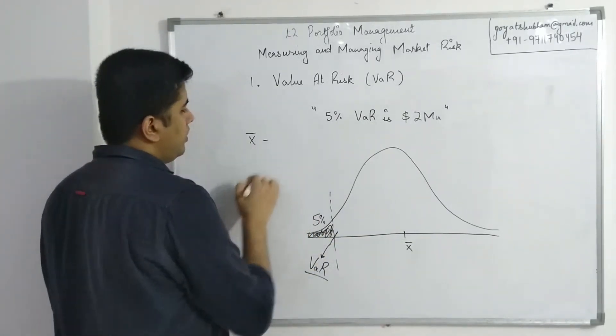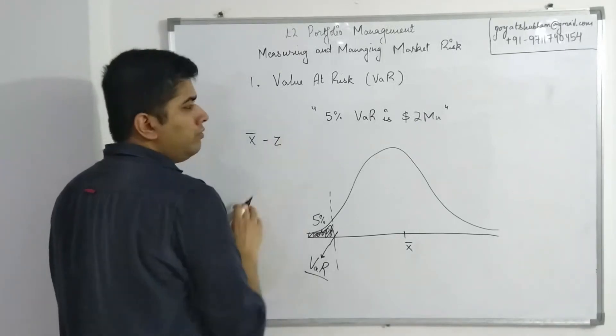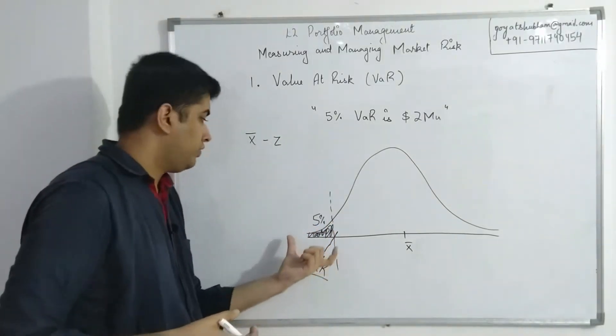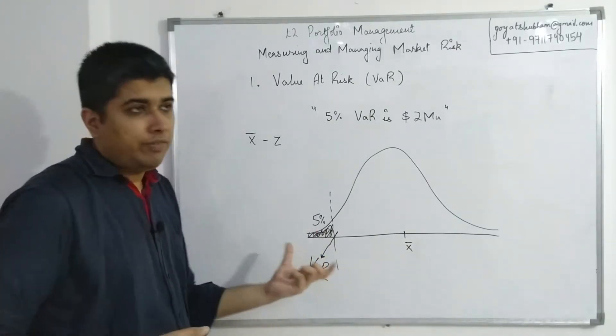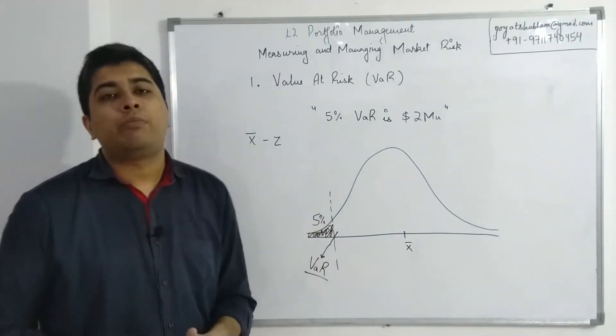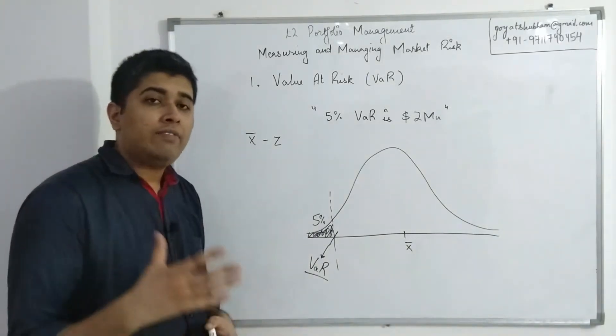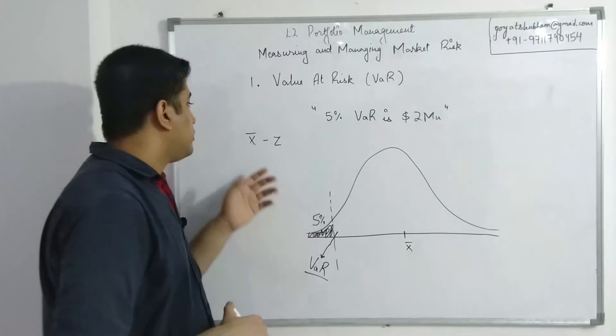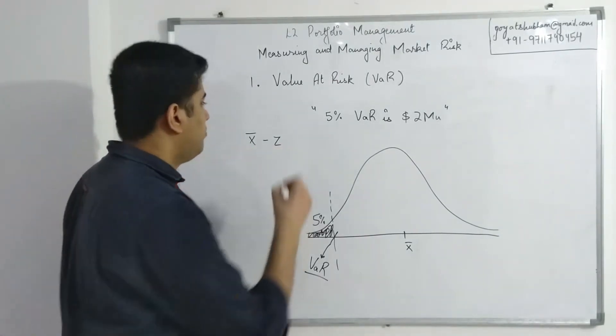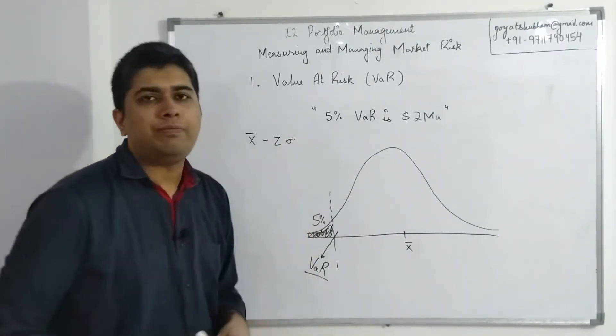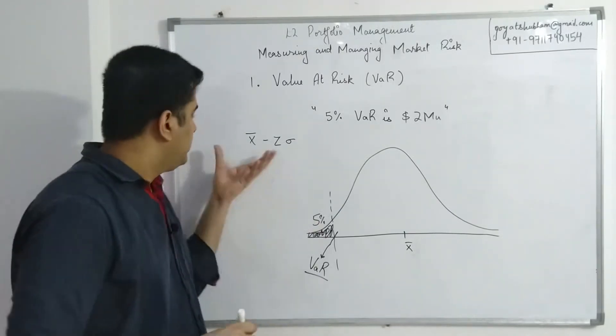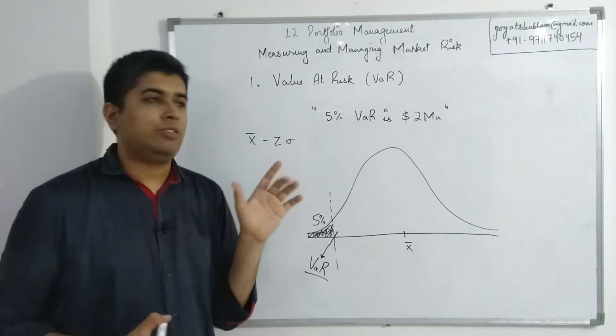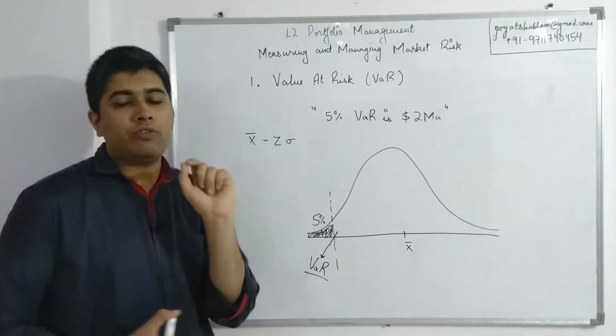normally our method was mean minus—because I only need left tail, this time it's not plus-minus, only minus—minus some z-value. Z-value would depend on the level of significance. This is five percent in one tail. If it is five percent in one tail, z would come out as 1.65. So you will have to remember the one-tail values that you had from Level 1 itself. So z-value multiplied with standard deviation.